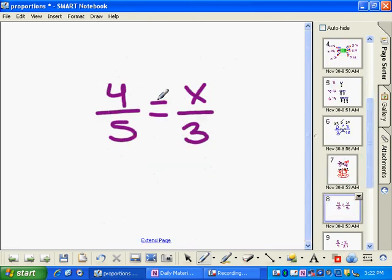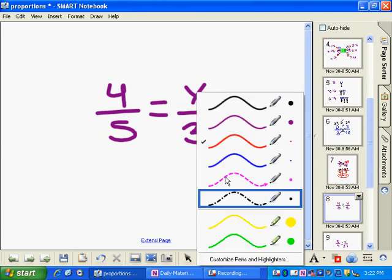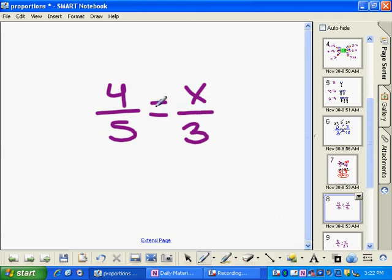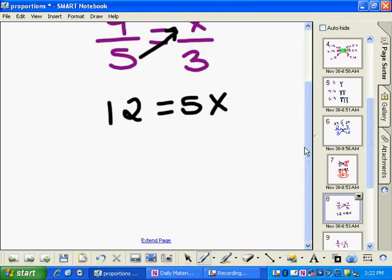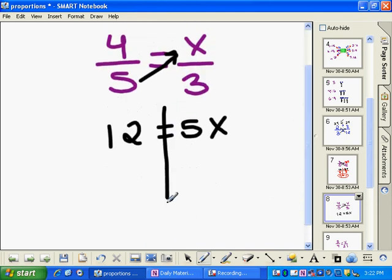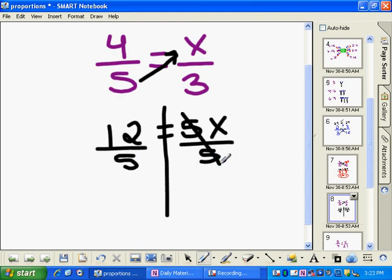The ratio 4 to 5 is equal to x to 3, so we want to make them proportional. Solve for x, so we're going to cross multiply. 5 times x, I'm going to go ahead and just write this down here, is 5x. And then 3 times 4 is 12. So again, to isolate the variable, I'm going to divide by 5, and it's just a coincidence that it's the same number from before. It's not always going to be 5.